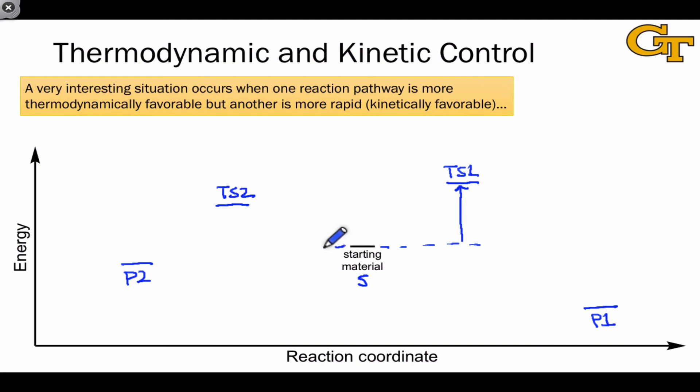The thermodynamic energy difference in going from S to P2 is the difference between the starting material and P2's energy. We label this delta G°₂. Delta G°₁ is the energy difference between S and P1. Now that we've laid down these four energy differences, we can see what's really interesting about this situation.